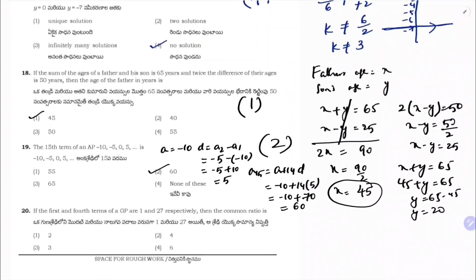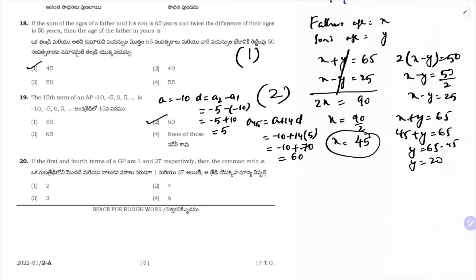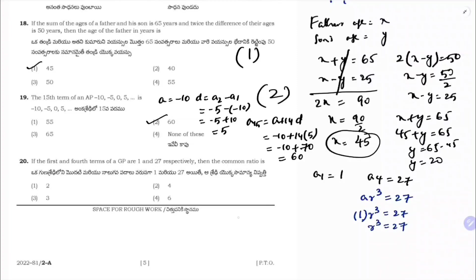If the first and fourth terms of a GP are 1 and 27, find the common ratio. First term a = 1. Fourth term = ar³ = 27. So 1 × r³ = 27, r³ = 27 = 3³, so r = 3. Common ratio is 3. Correct option is 3.